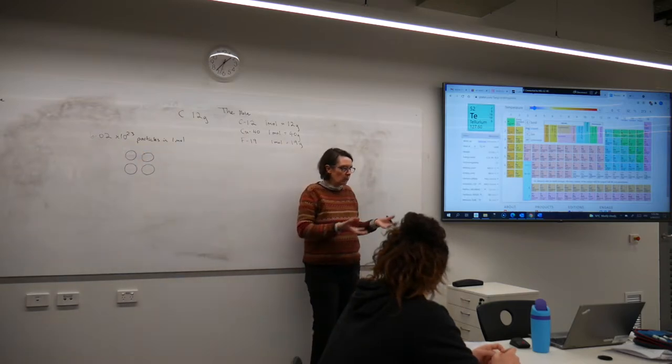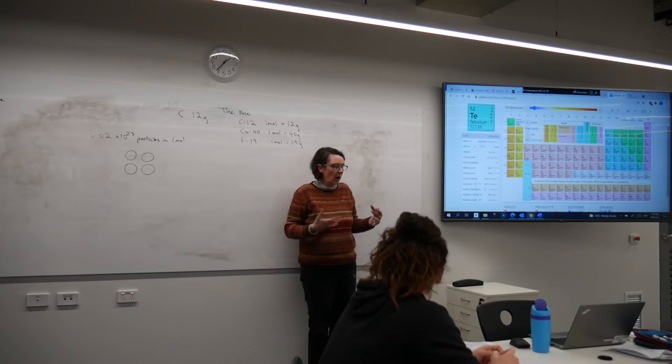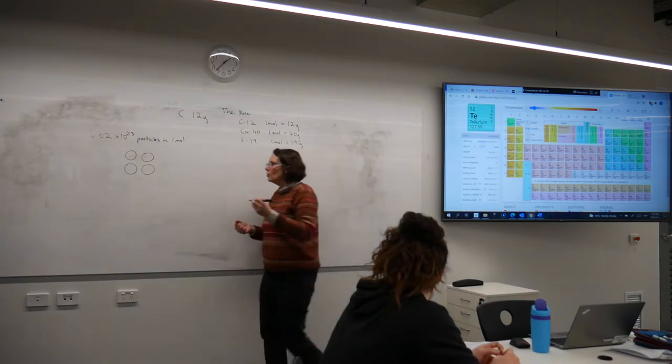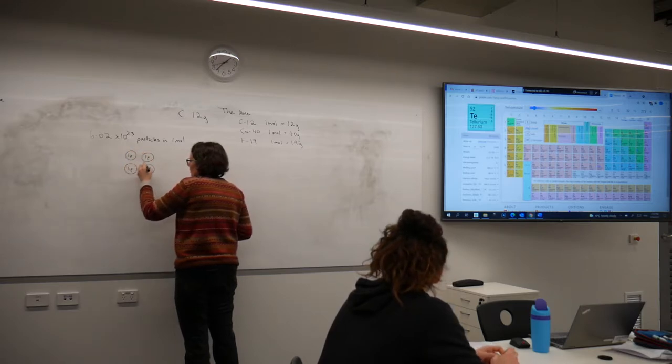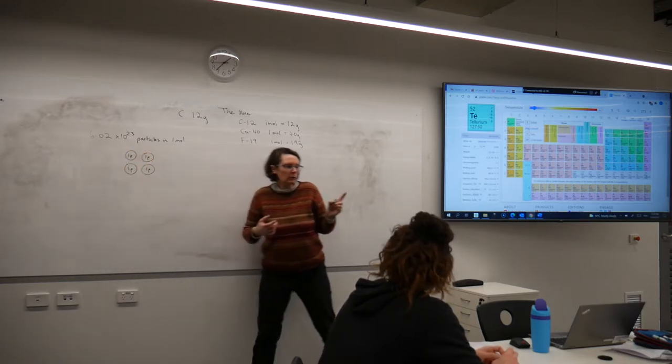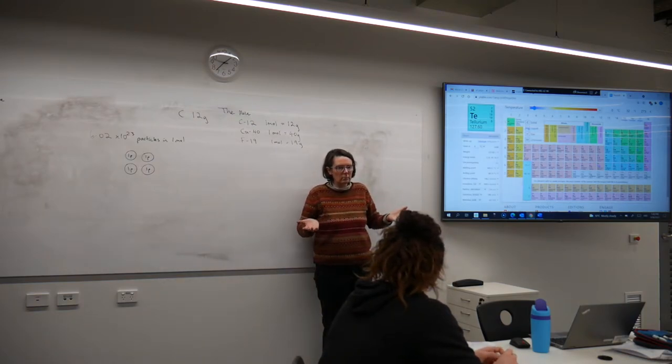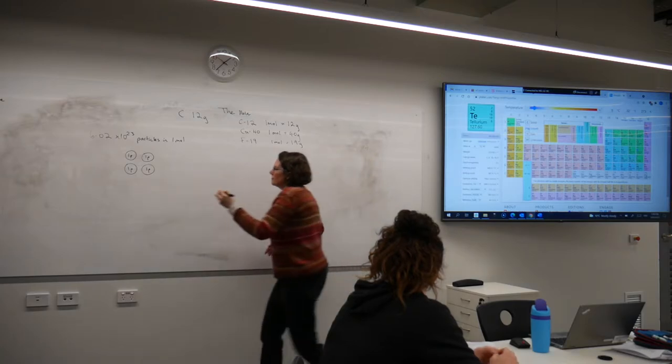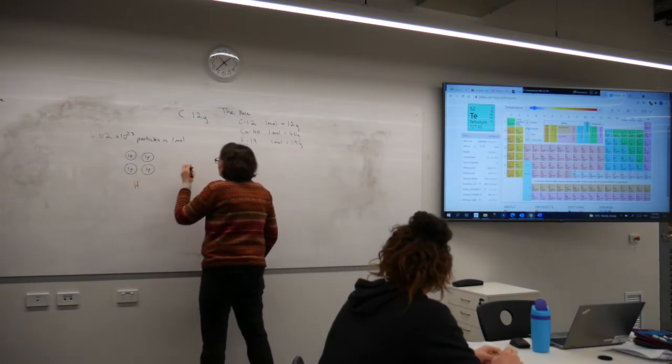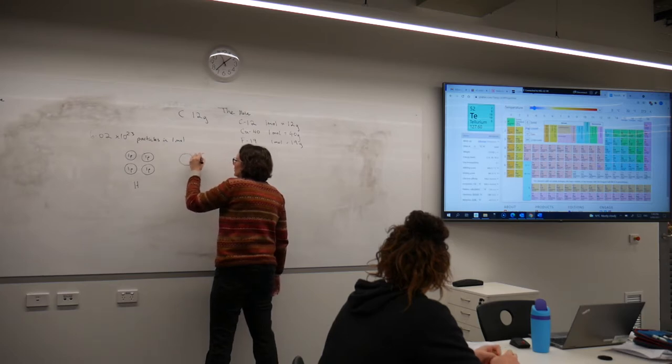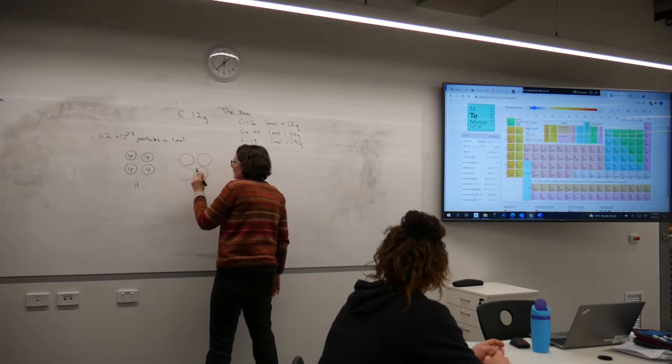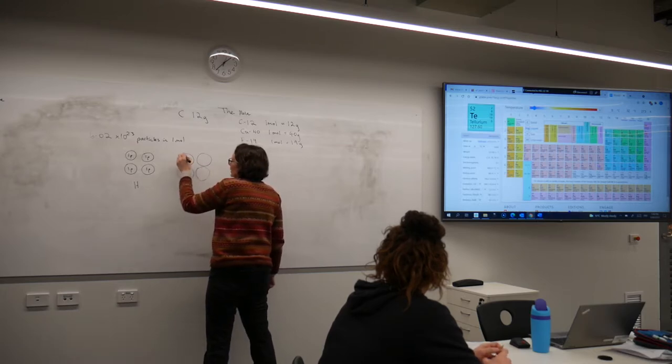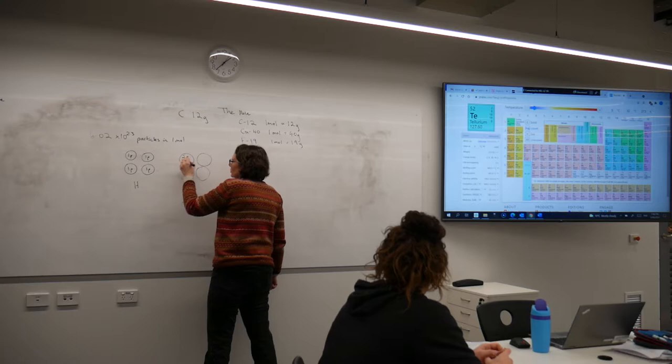If I've got four atoms of hydrogen, I've only got one proton in each. If I have one mole of hydrogen, it's going to weigh one gram. But if I think about helium, and I've got the same number of helium atoms as hydrogen atoms, this time I've got two protons and two neutrons.